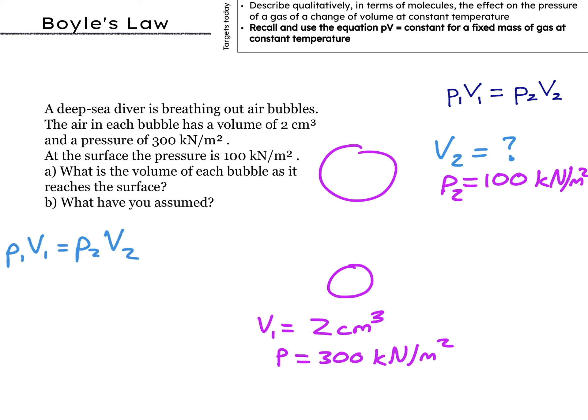We're going to want to find V2, so let's rearrange it for simplicity. V2 equals P1V1 over P2. Then sub the values in 300 times 2 over 100, giving us 6 centimeters cubed.